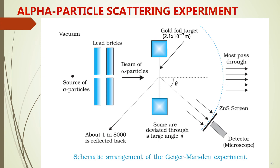In this experiment, we have a source of alpha particles — bismuth — which is made to pass through lead bricks to get a narrow or collimated beam. This beam is made to fall on a gold foil of thickness 2.1 × 10⁻⁷ meters.